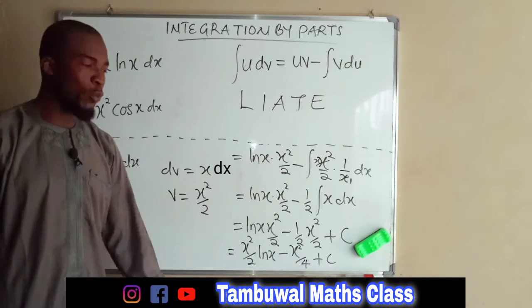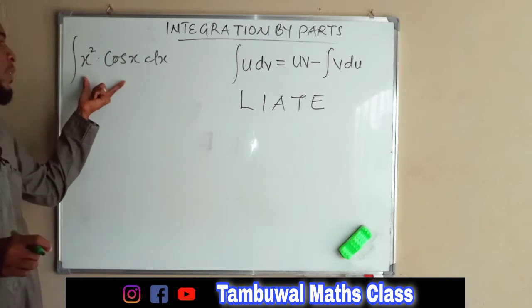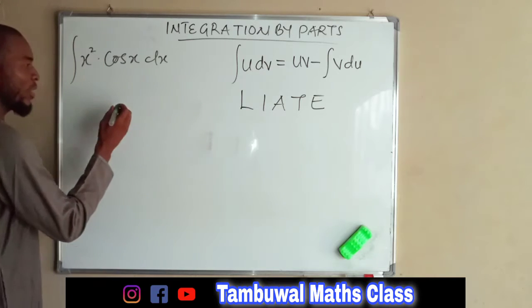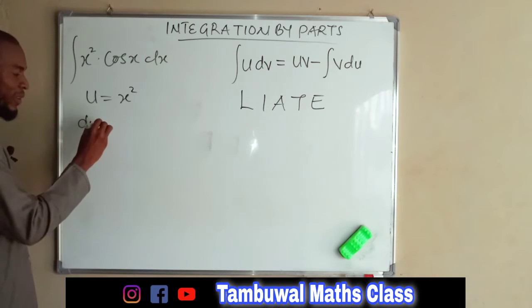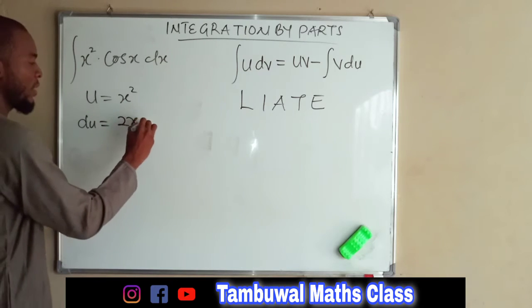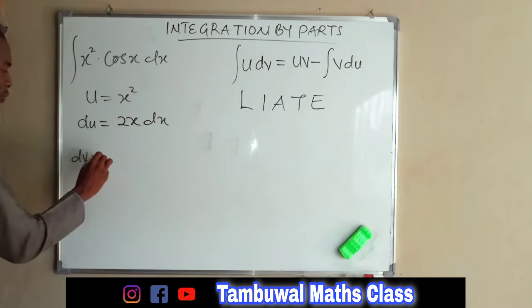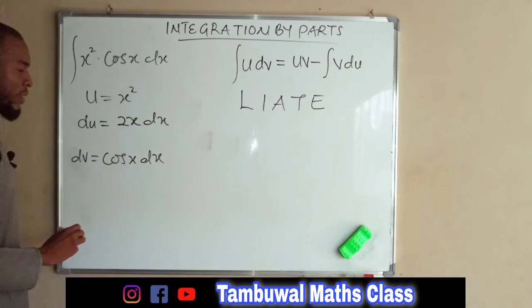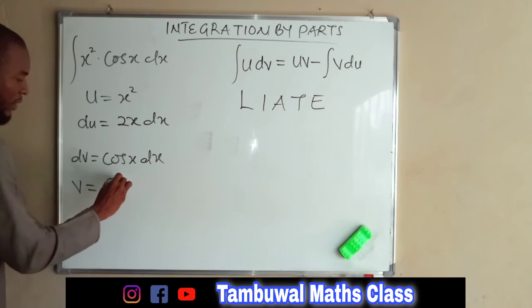Now let us look at the second problem, which is the integral of X squared cos X with respect to X. Following the LIATE acronym, we have an algebraic function which comes first, so we set U equal to X squared. Differentiating, DU equals 2X dX. The other function: DV equals cos X dX. Integrating both sides, V equals sin X.